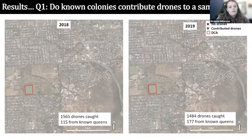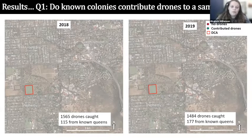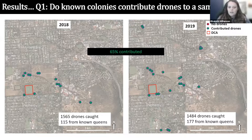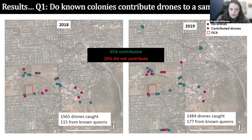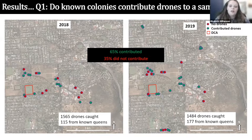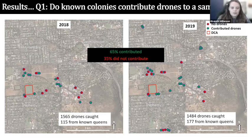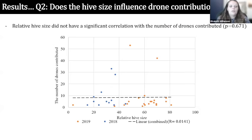Onto the results. For the first question — do my known colonies contribute drones to a sample? — we got really high drone samples of around 1,500. We found 65% of known colonies contributed at least one drone to a sample, but this left 35% with no contribution. This is a significant non-sampling error. Importantly, this non-sampling error did not correlate with hive size and did not correlate with distance, so something else is happening. The significance is that you would be underestimating the density by about a third.